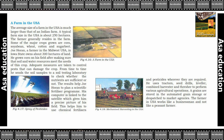The average size of a farm in the USA is much larger than that of an Indian farm. A typical farm size in the USA is about 250 hectares. The farmer generally resides on the farm. Some of the major crops grown are corn, soya bean, wheat, cotton, and sugar beet.